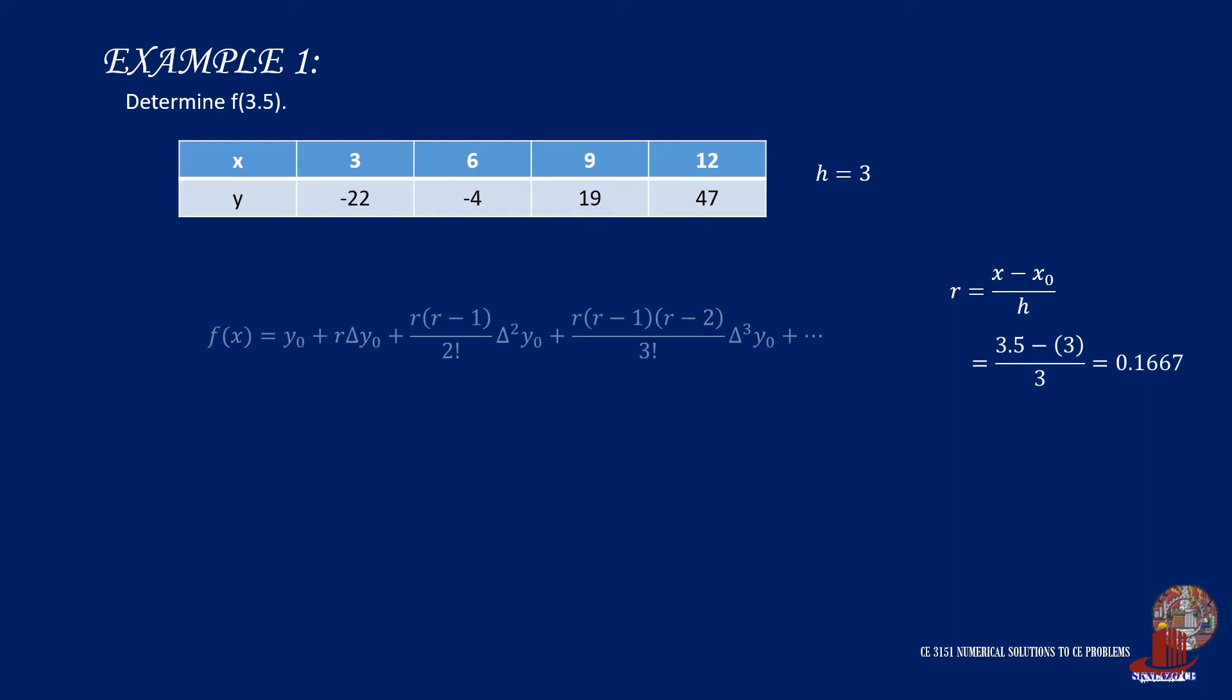With all variables already identified, start computing for f(x) from the formula. y0 is the first y from the table, and that is -22. The second term, r delta y, is 0.1667 multiplied by the value from the table, which is 18. The third term is r, which is 0.1667 multiplied by r minus 1, or 0.1667 minus 1 times delta cube y, which is 5 from the table, all over 2 factorial. Simplify the computation and arrive at f(3.5) as -19.346678.